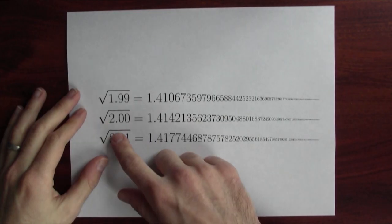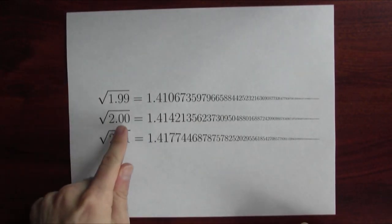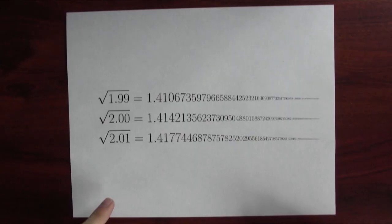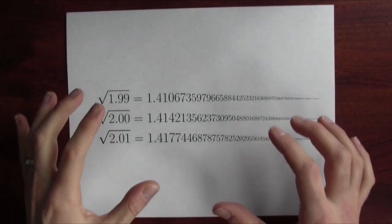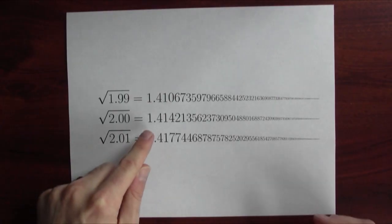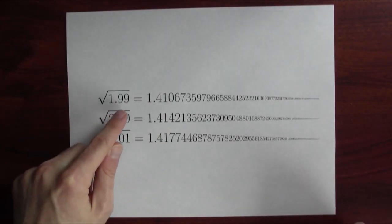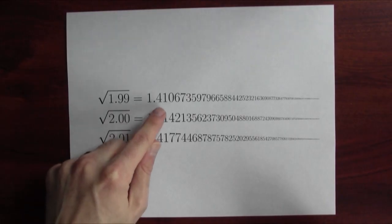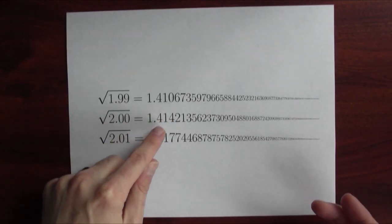Let's think back to our friend, the square root function. What's the square root of 2? The square root of 2 is about 1.414. What's the square root of 2.01? It's awfully close — it's 1.417 and a bit more, which is really close to the square root of 2. What's the square root of 1.99? It's also really close to the square root of 2 — it's 1.410 and a bit more, which is really close to 1.414.